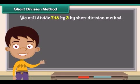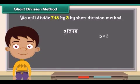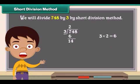Now we will divide 748 by 3 by short division method. Divide the first number in the dividend. 3 twos are 6, and 7 minus 6 is 1. Write 2 above and 1 near 4 to make it 14.